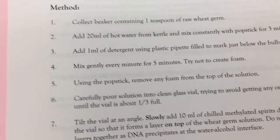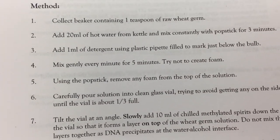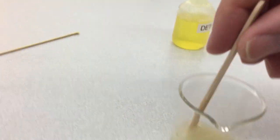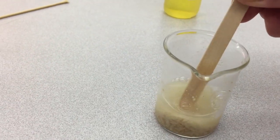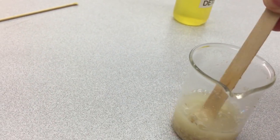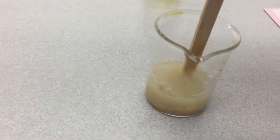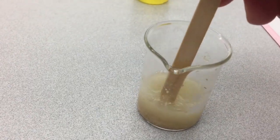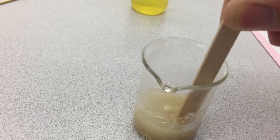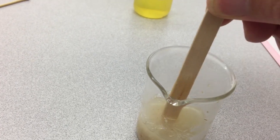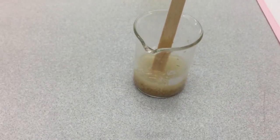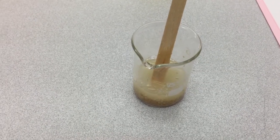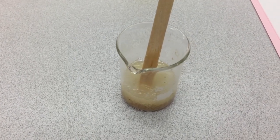And step 4 is to mix gently every minute for 5 minutes. Now this really is a very gentle mix. We're literally going to fold it over and gently move the detergent around. We want to try and create as few bubbles as possible. And now I'm going to leave it for 1 minute, and then do the same again once per minute for 5 minutes.